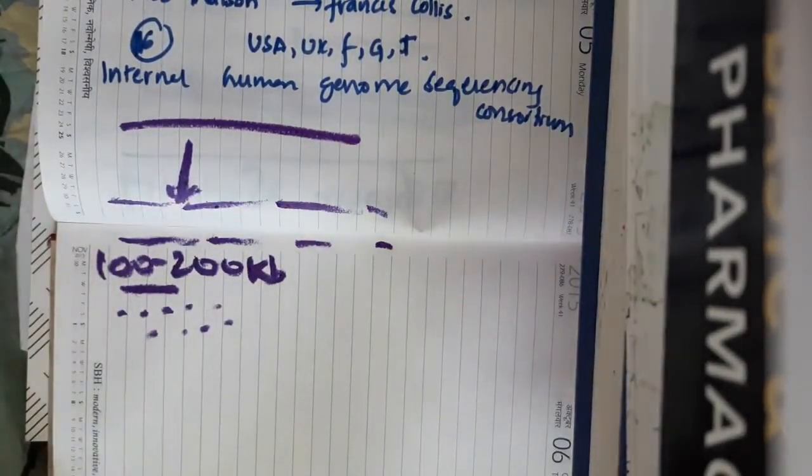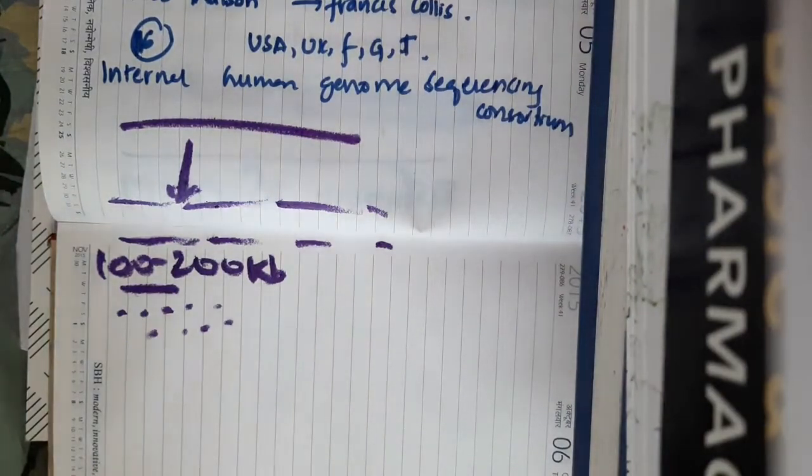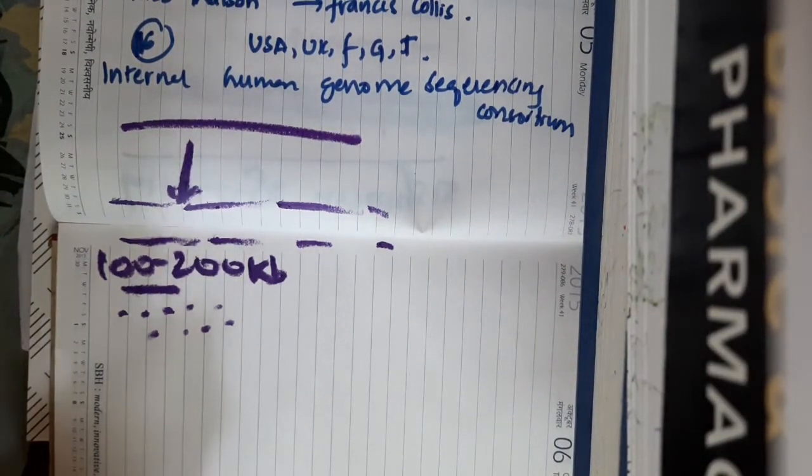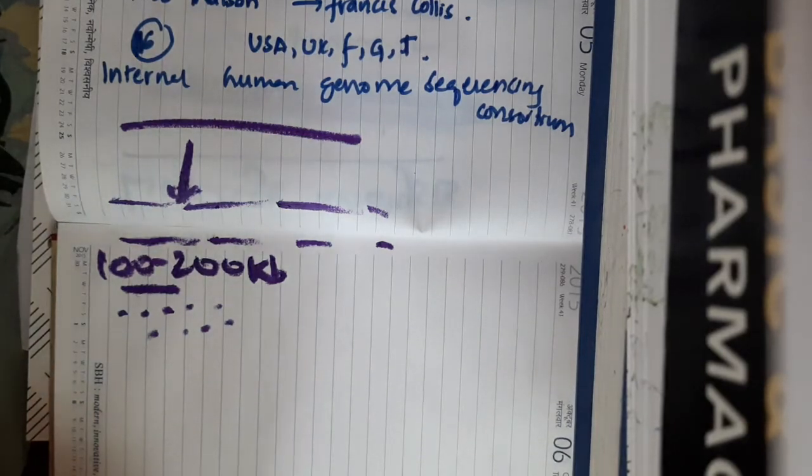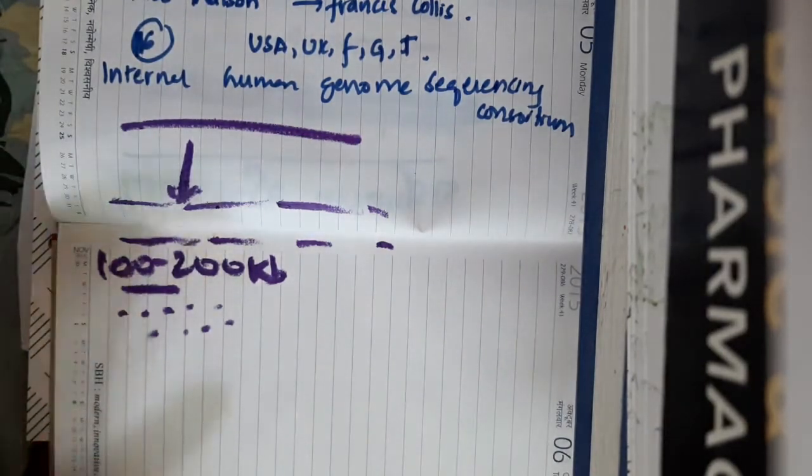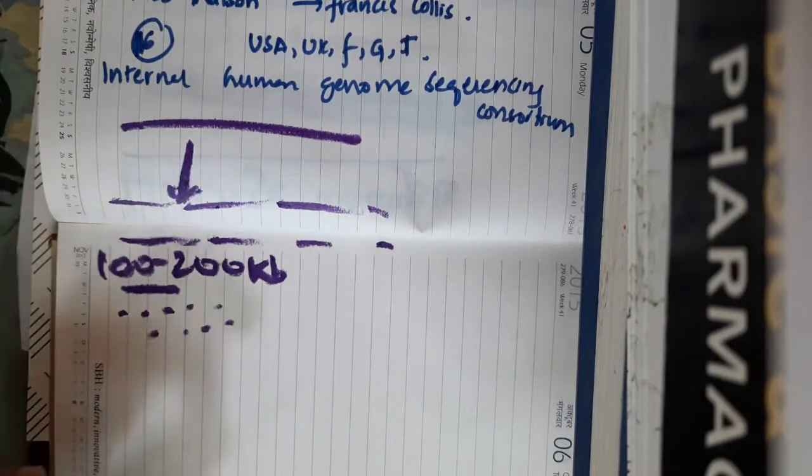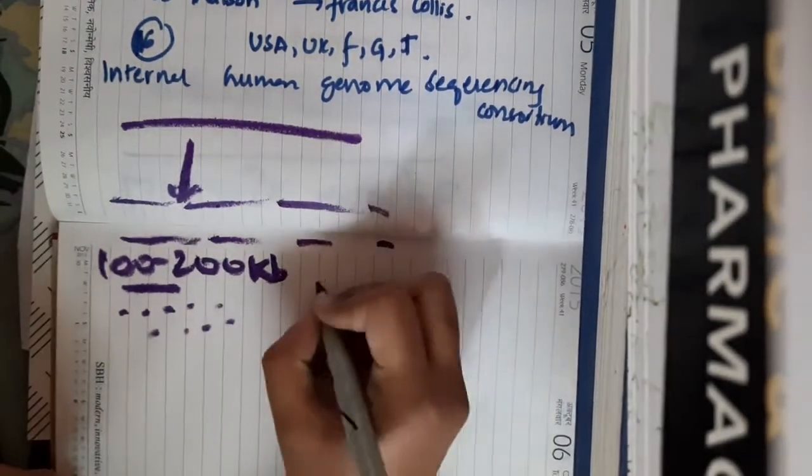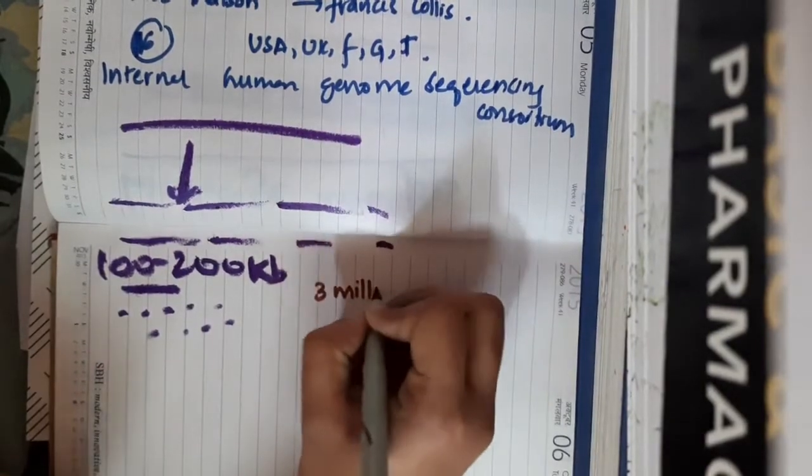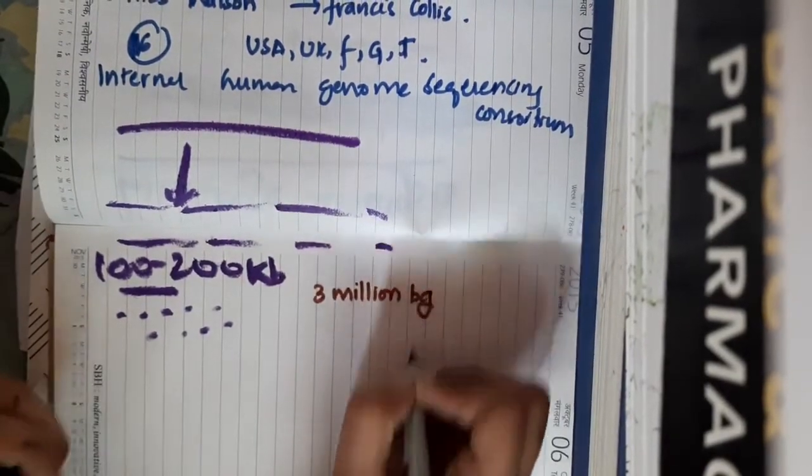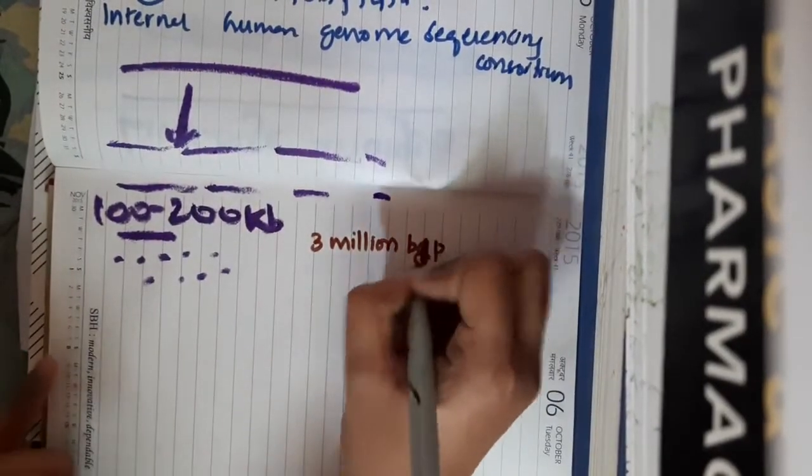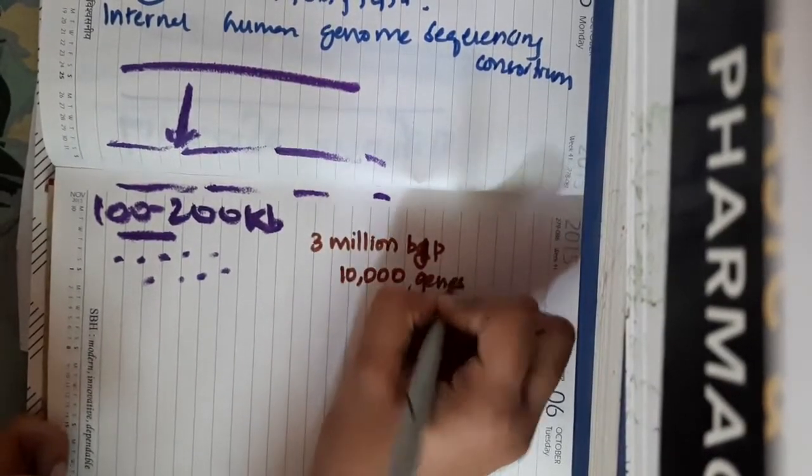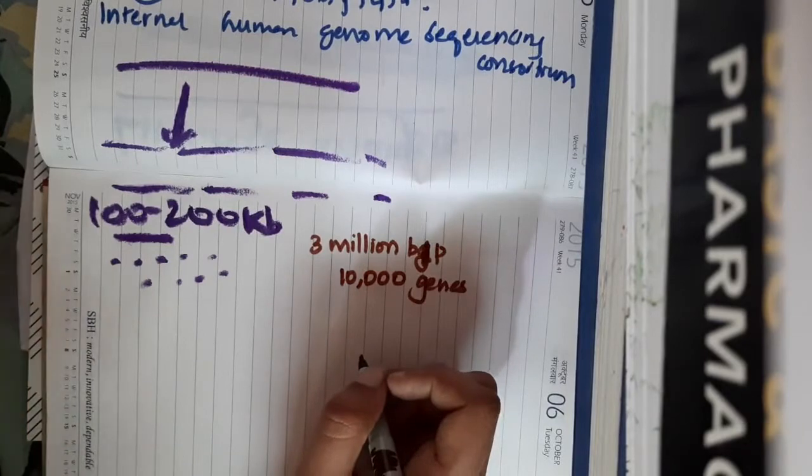Those which are overlapping sequences, all those are separated. And almost the whole set of human DNA with almost 3 million base pairs has been sequenced.